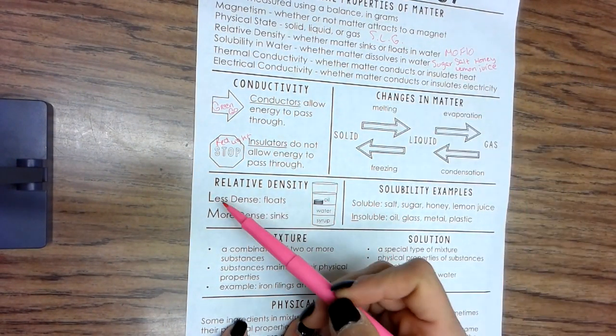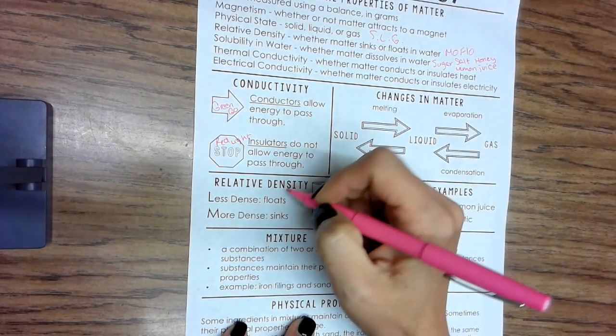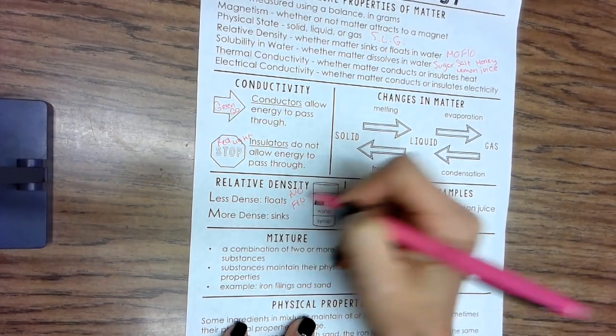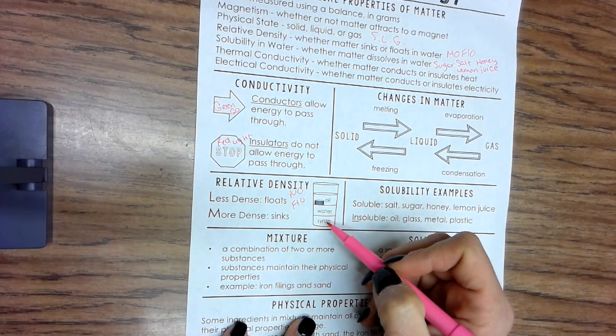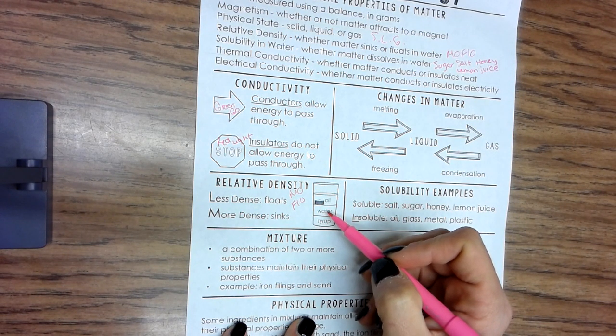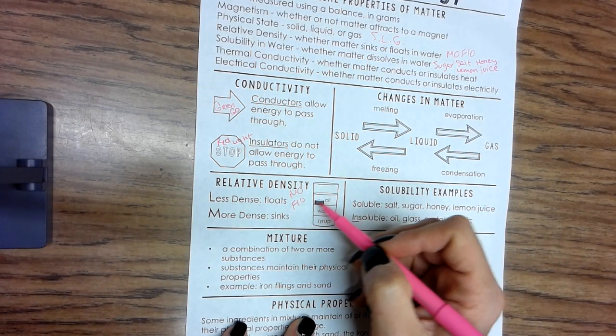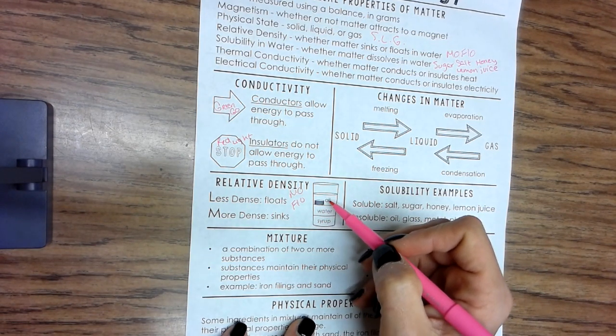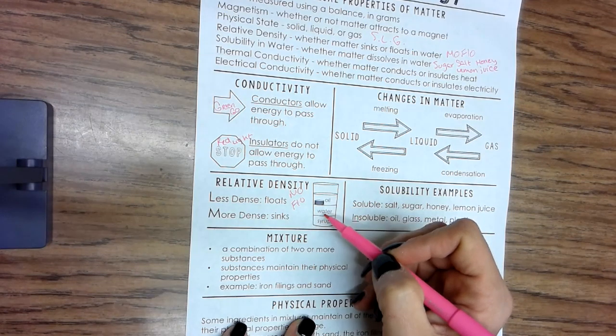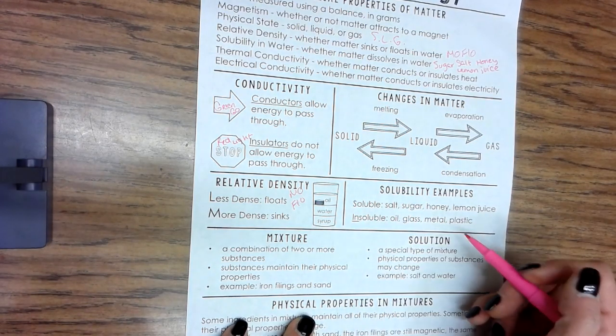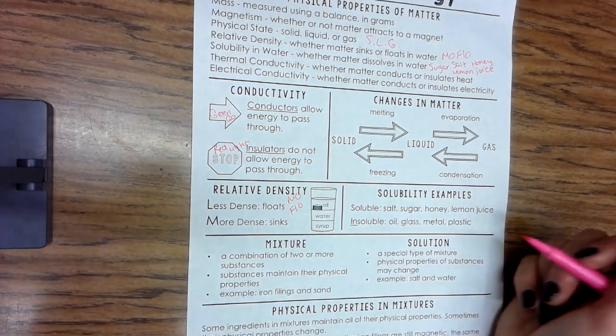Relative density: less dense floats, more dense sinks - mofo. Syrup is more dense than water. Water is more dense than oil. Whatever this thing is, is more dense than the oil but less dense than the water.